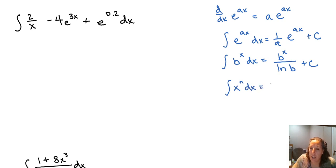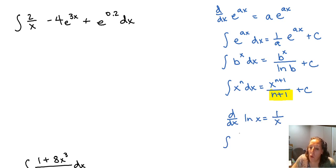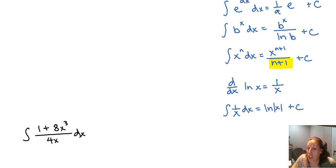For logarithmic functions: the power rule when we have x to the n gives us x to the n+1 over n+1 plus C, but if n equals negative 1 that gives us 0 in the denominator. Remember that the derivative of the natural log function is 1 over x, so going backwards the integral of 1 over x dx is the natural log. We put absolute value bars on it because the natural log is not defined for negative arguments, but the antiderivative is defined as long as x is not equal to 0.